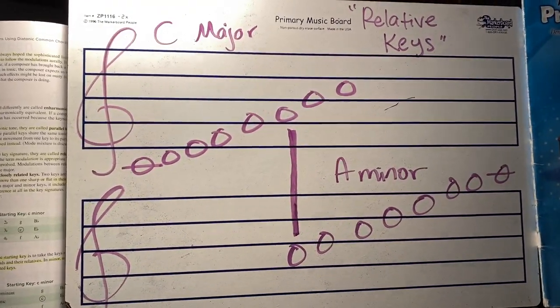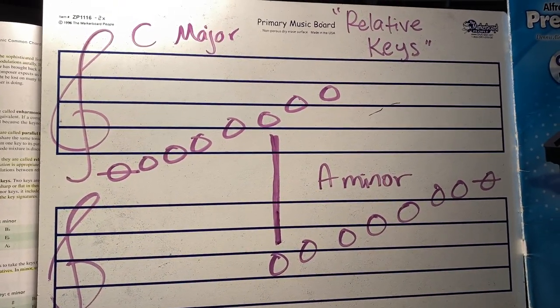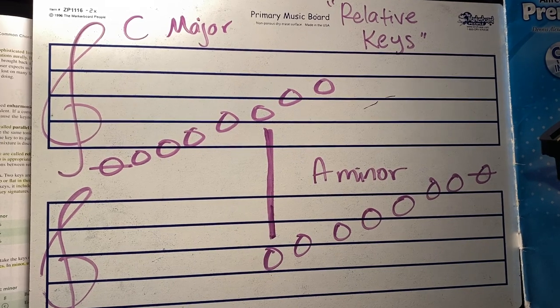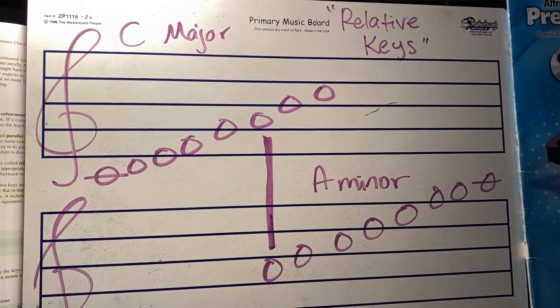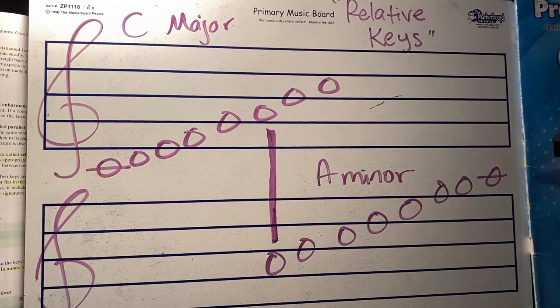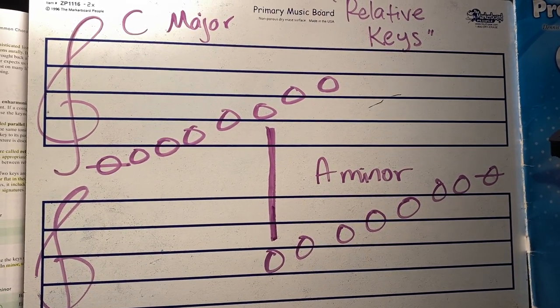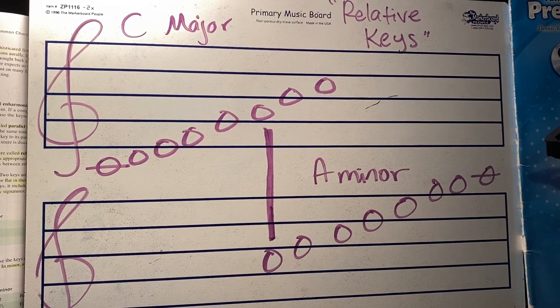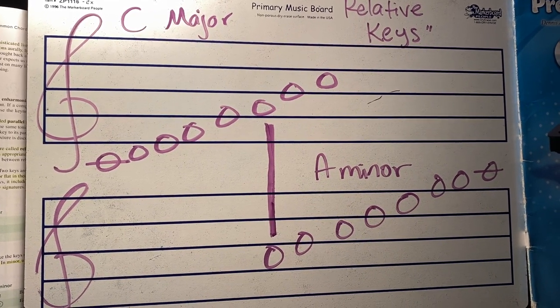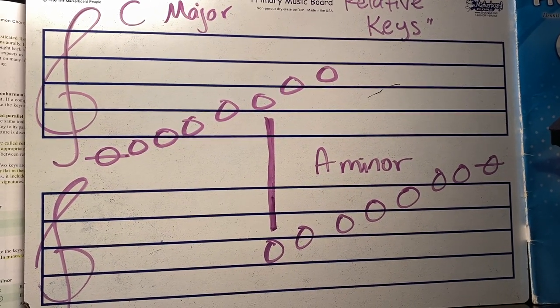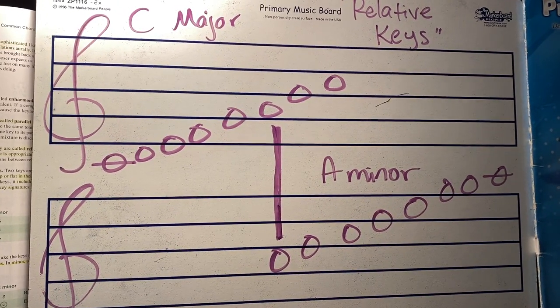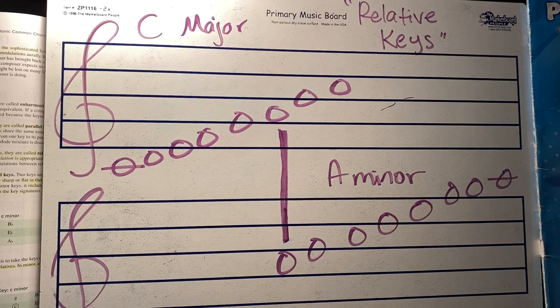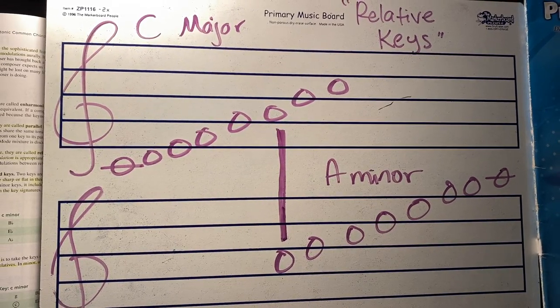When you think about relative major and relative minor, these are probably the most closely related keys, because you're using the same exact notes. A lot of music will actually modulate from the minor to the relative major, or from the major to the relative minor, because it's really easy to modulate that way.